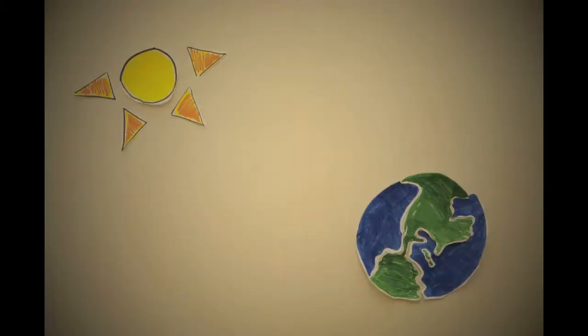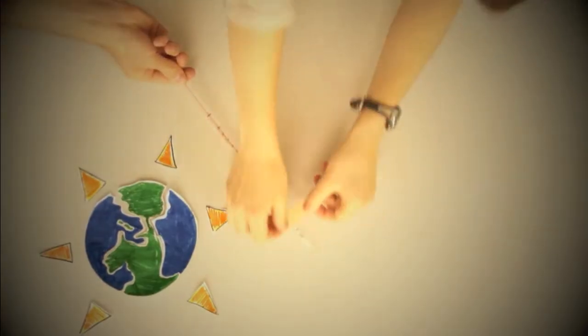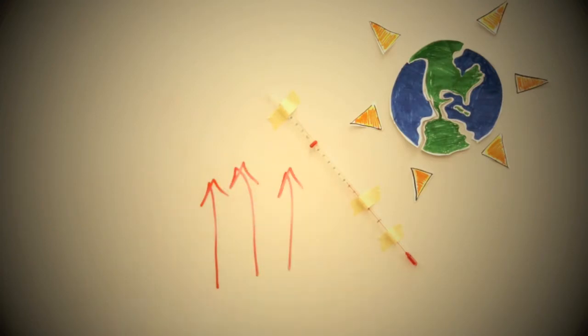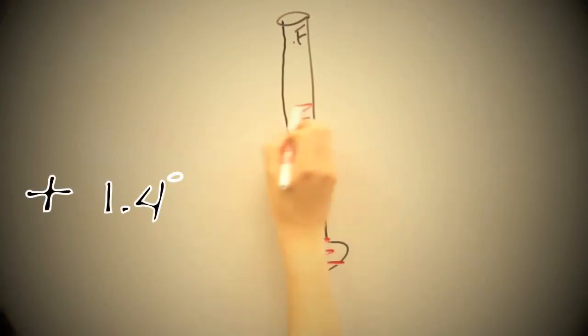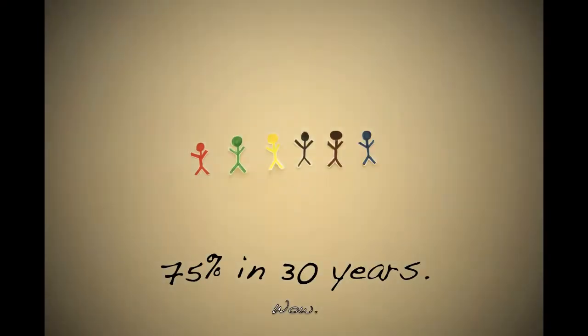This phenomenon, when caused by natural greenhouse gases like water vapor, is beneficial to life on earth because it keeps the planet at a livable temperature. However, the level of unnatural chemicals in the atmosphere has caused the earth to become too warm in recent decades. The global temperature has increased by 1.4 degrees over the last century, and 75% of that increase occurred during the last 30 years.